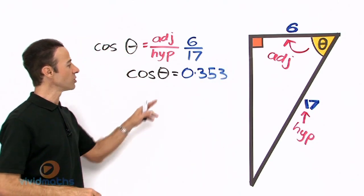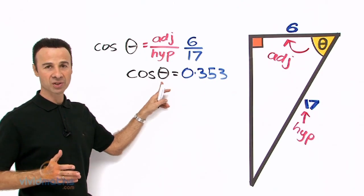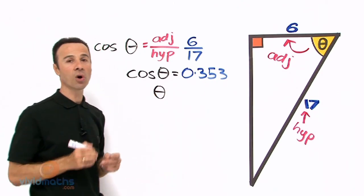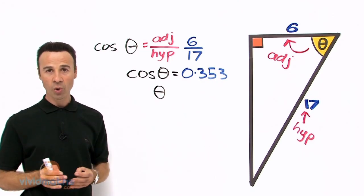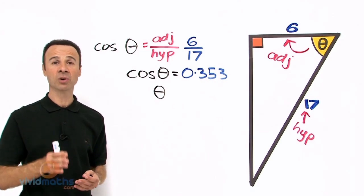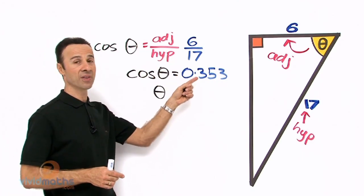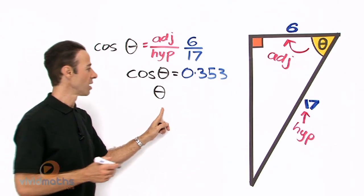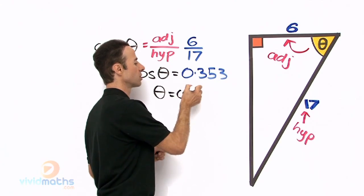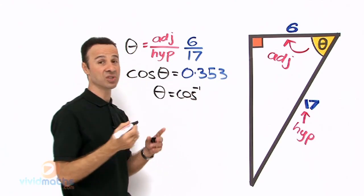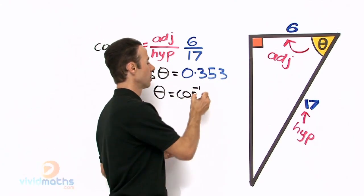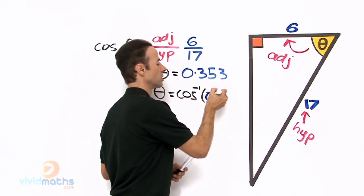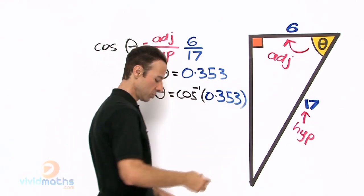6 divided by 17 gives you a decimal of 0.353 rounded to 3 decimal places. Now what we want to do is get this theta all by itself individually. The way to do that is to shift cos, inverse cos, or second function cos depending on the calculator, and bring the cos over that side so the theta becomes individual by itself. So that equals cos power minus 1 (inverse) bracket 0.353.